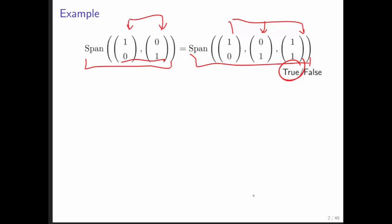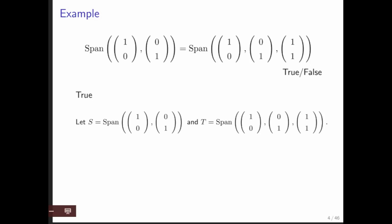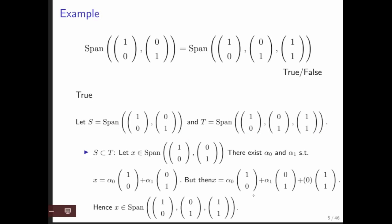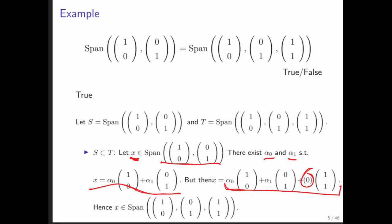The answer is yes. If you set S to be the span of the first set and T to be the span of the second, then S is a subset of T. Why? Because if you start with a vector x in the span of S, then you know there's an α₀, α₁ such that x can be written as that linear combination. But then you can certainly write it with a coefficient of 0 multiplying (1,1). Therefore we can find coefficients such that a linear combination of these three vectors equals x, and therefore x is in the span of these three vectors.